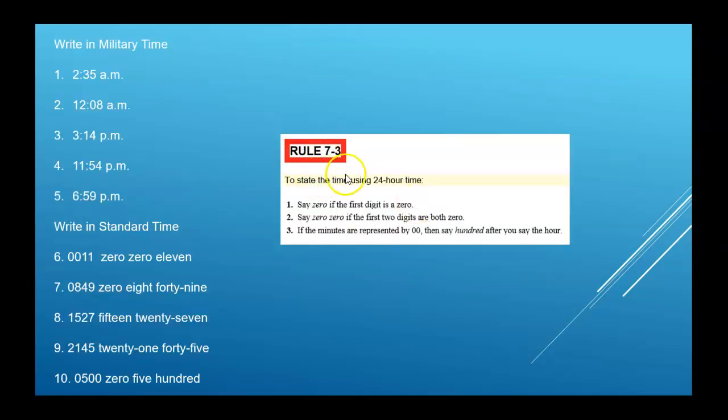So a couple of rules when you state time, you say 0 if the first digit is a 0. Say 00 if the first two digits are both 0. So it's like if you stayed up till 20 minutes after midnight, you'd say 0020. If the minutes are represented by 00, then say 100. So if you stayed up till one o'clock in the morning, you'd say 0100 hours.